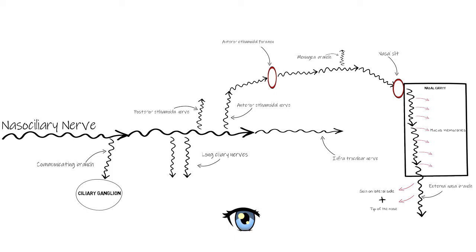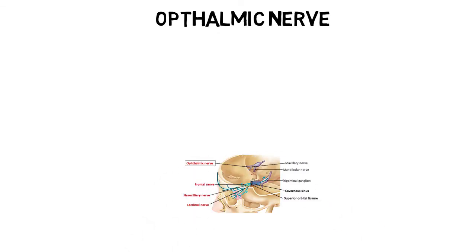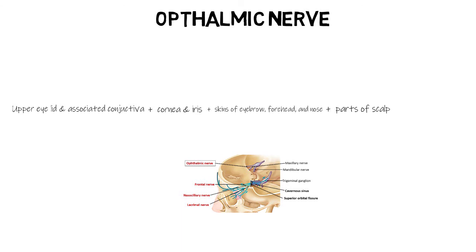Those were the three branches of the ophthalmic nerve and their further subdivisions. To summarize, the ophthalmic nerve supplies general somatic afferent sensation to the skin and mucous membranes of the upper face, some parts of the skull, and the orbit. This concludes the ophthalmic division of the trigeminal nerve.